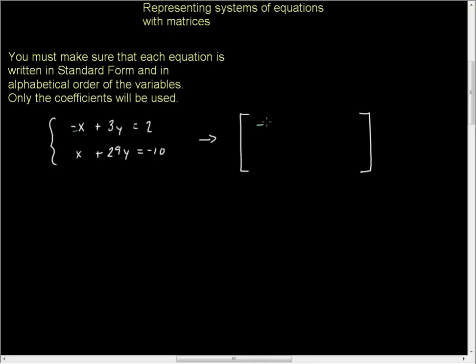This is going to be negative 1, 3, and 2. On the bottom row, we have 1, 29, and negative 10. I'm going to separate the augment here. Recall that the matrix on the left with the four elements, or entries, this is called the coefficient matrix. The second matrix over here that has simply two entries is called the augment. Together, it's called an augmented matrix.